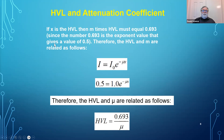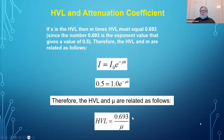How are the HVL and attenuation coefficient related? If x is the half value layer thickness, then I = I₀·e^(-μx), and since the beam is cut in half, I = ½·I₀·e^(-μx). Doing a little algebra — taking logarithms of both sides — the half value layer equals the natural log of 2 divided by the attenuation coefficient. That's the relationship between the two.